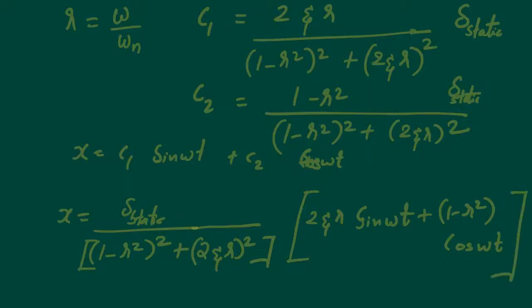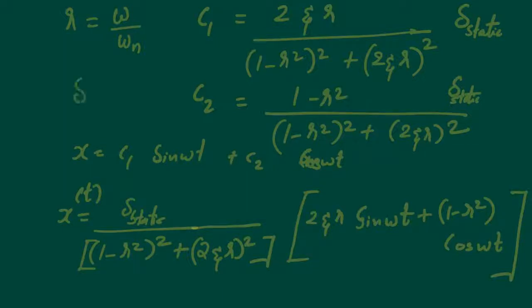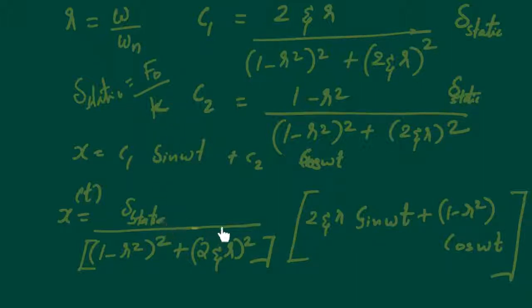As predicted earlier, x(t) depends on the system parameters through r = ω/ωₙ (which involves the forcing frequency and natural frequency) and through δ_static = F₀/k (which depends on excitation magnitude and stiffness). This confirms our initial reasoning. In the next video, we will physically appreciate this result.